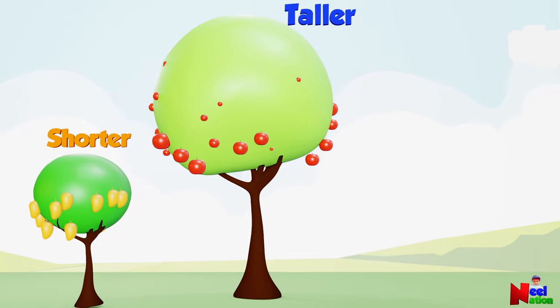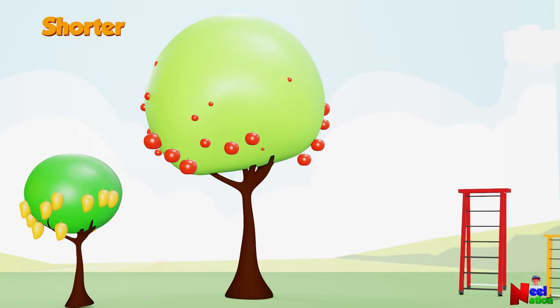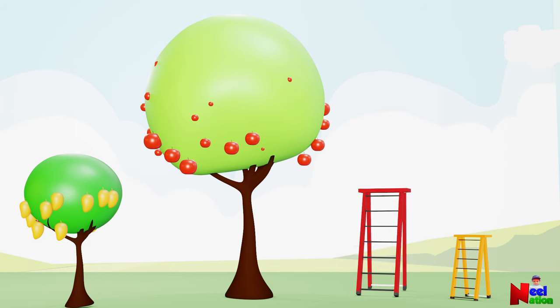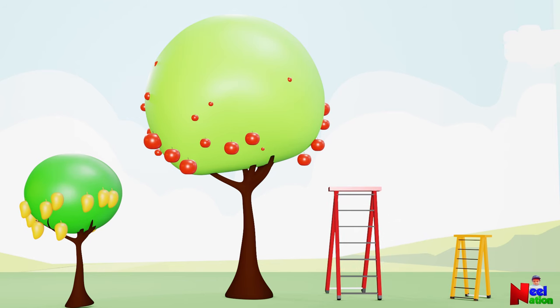Here comes the tricky part. You have two ladders here: a red ladder and yellow ladder. So if you need to pick some apples from the apple tree, which ladder would you choose? Red ladder. Red ladder is taller than yellow ladder. Yes, you are right. You need a tall ladder to pick apples from a tall apple tree.